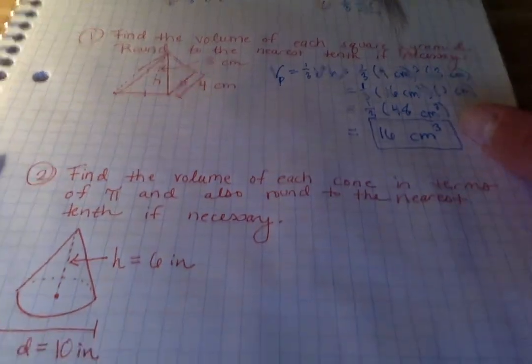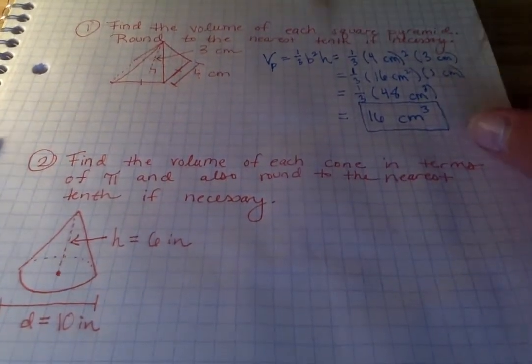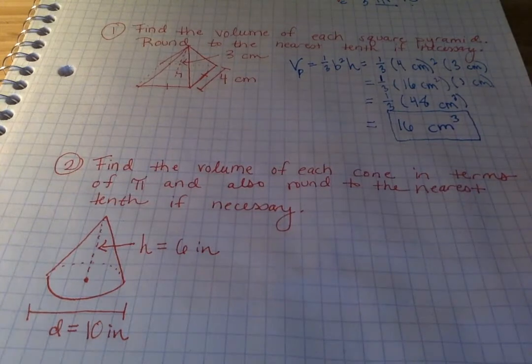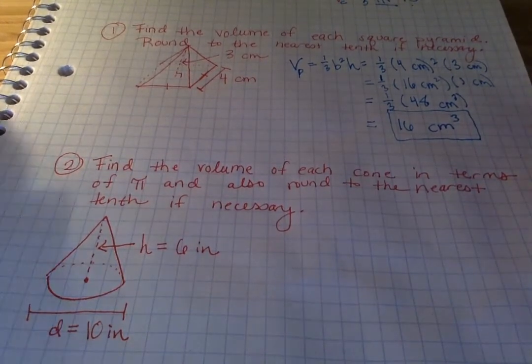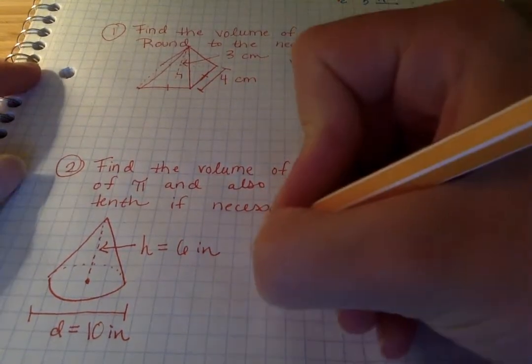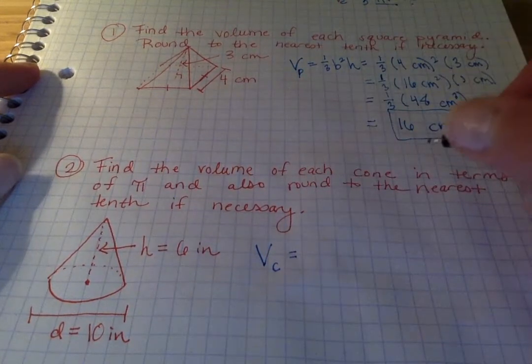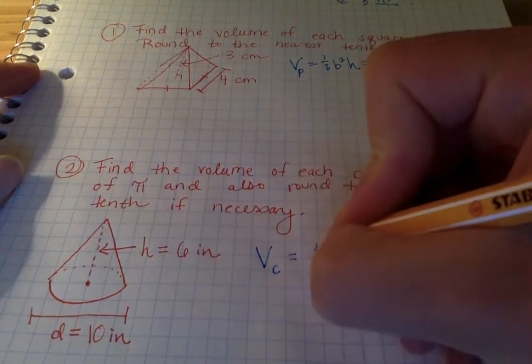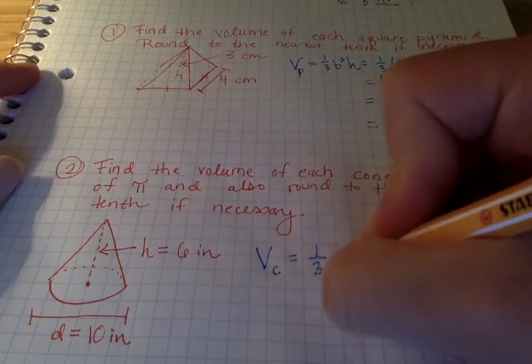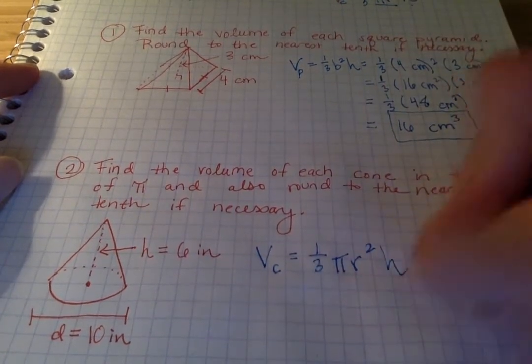All right, the second one. Now we've got a cone, and we're finding the volume of the cone and rounding to the nearest tenth if necessary. So now we need our volume of a cone equation, the C being our subscript, and we use one-third pi r squared h.